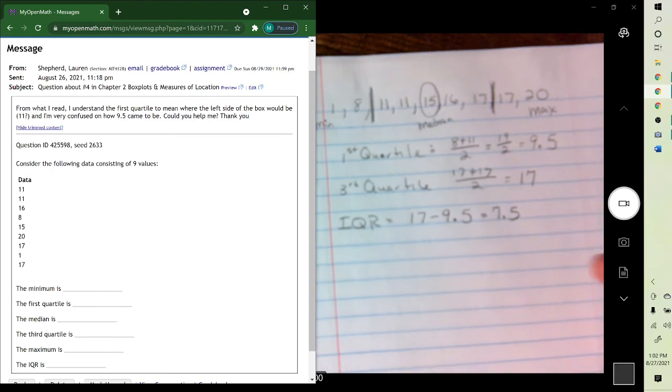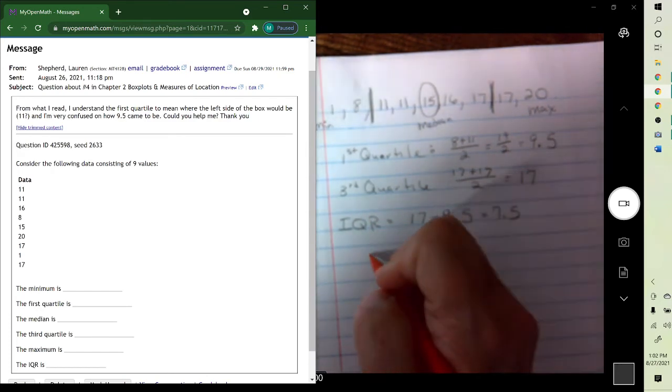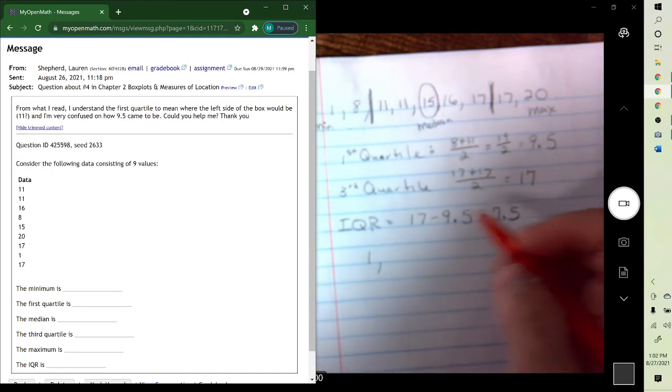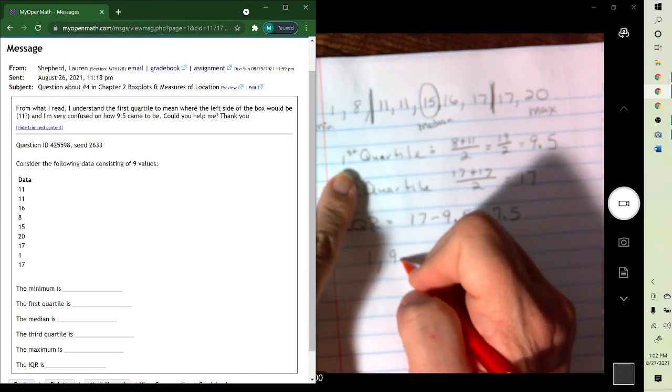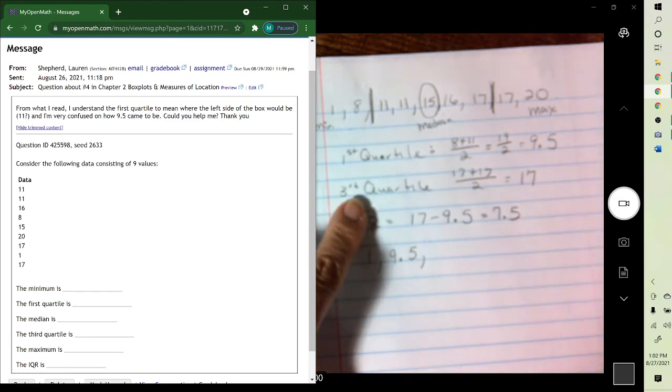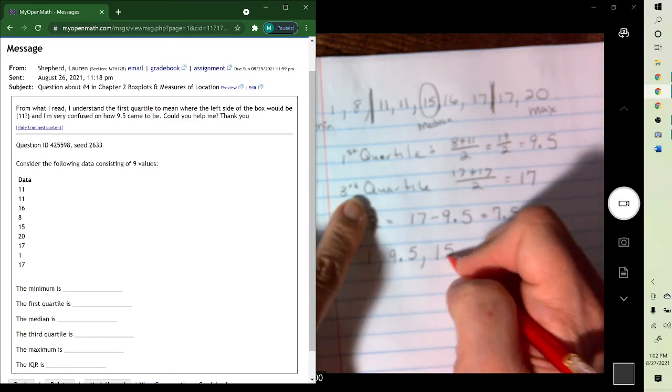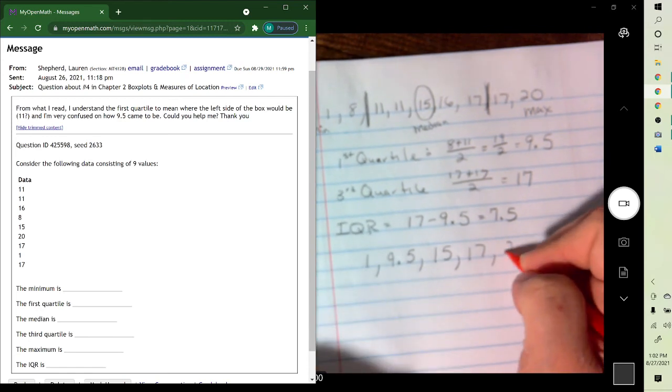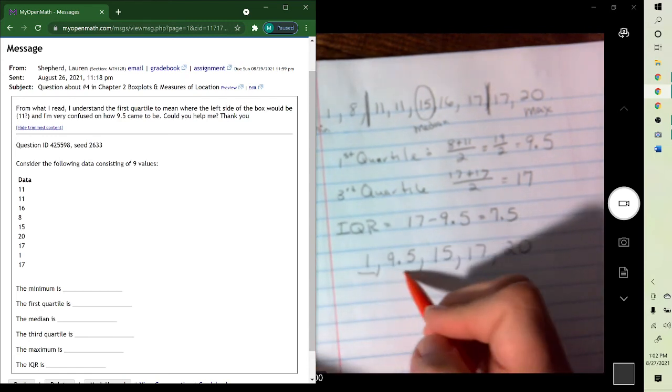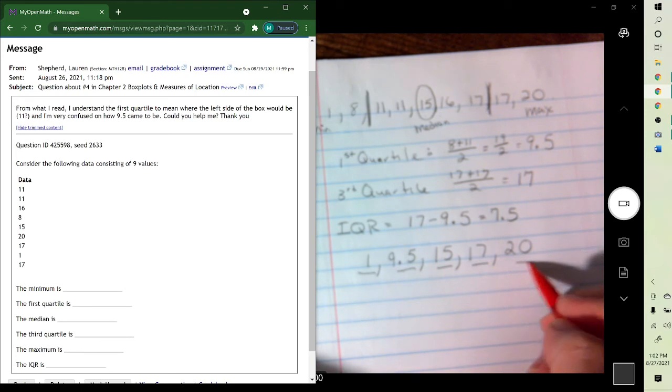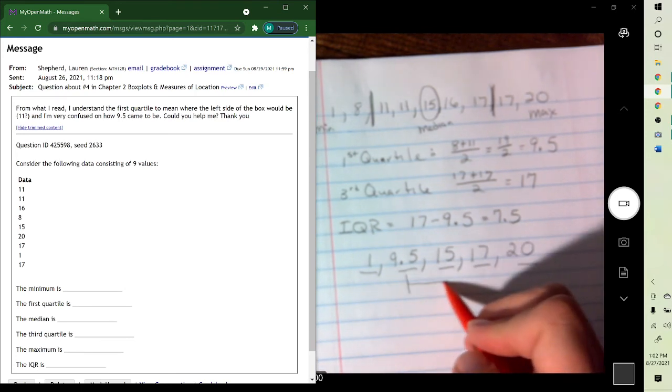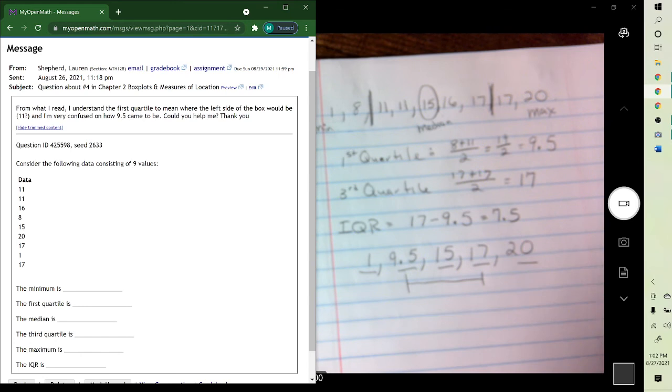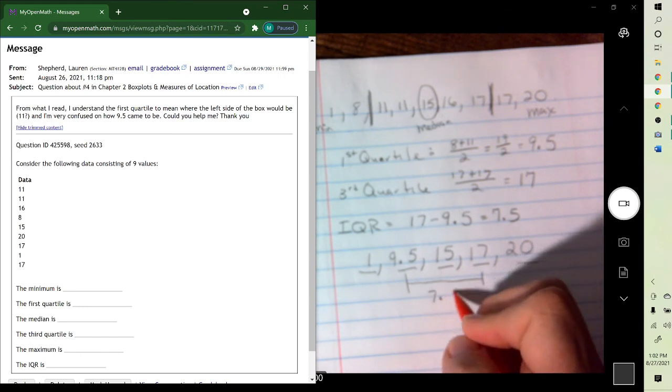And there you go. So that would be the five number summary: it's the smallest value, the first quartile, the median, the third quartile, and the largest value. And then the interquartile range is just this distance, which was 7.5.